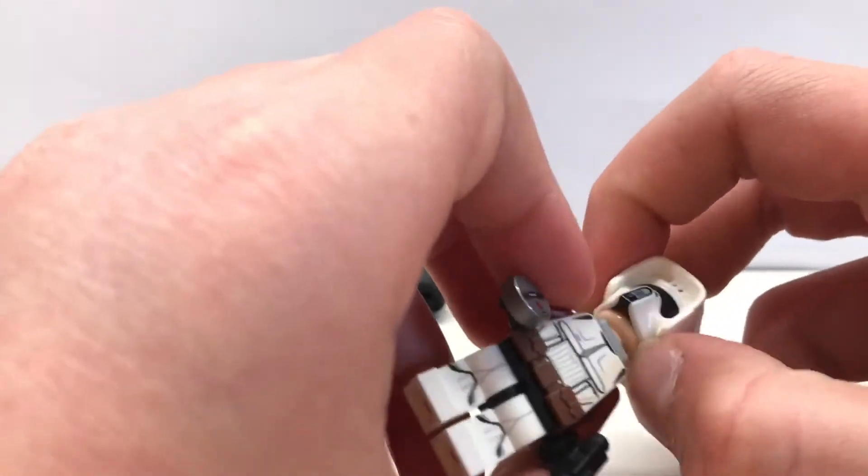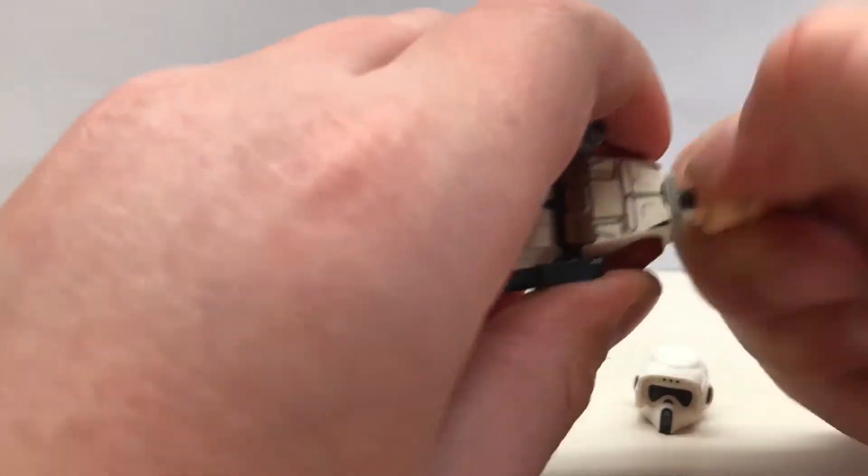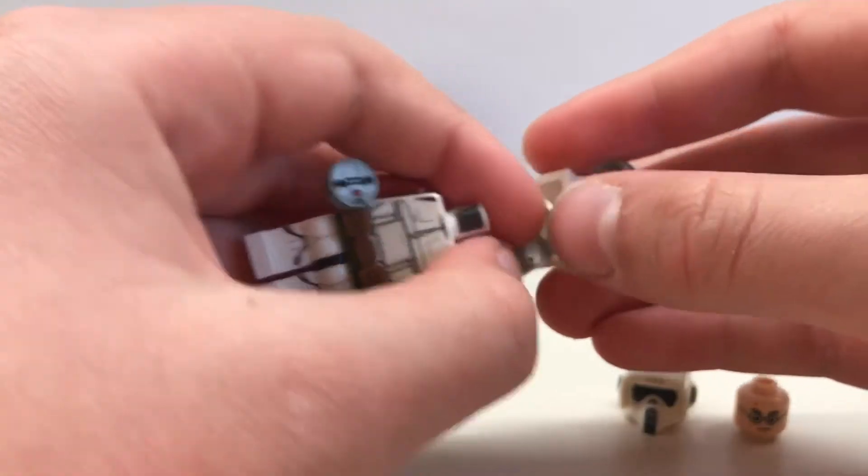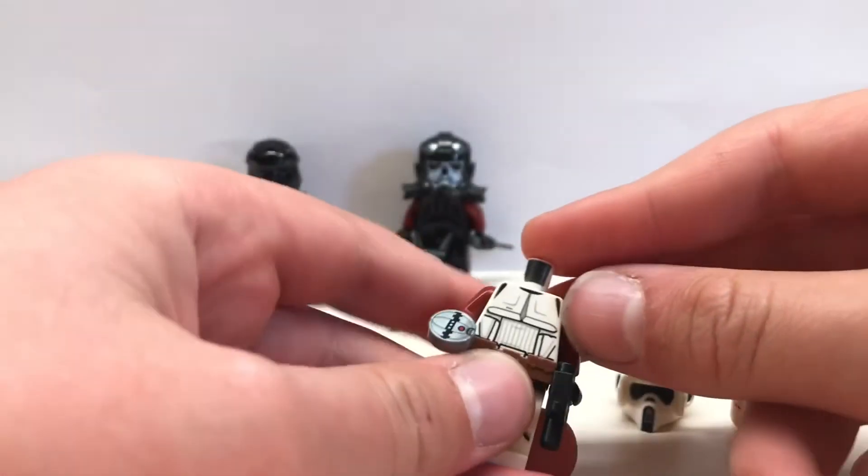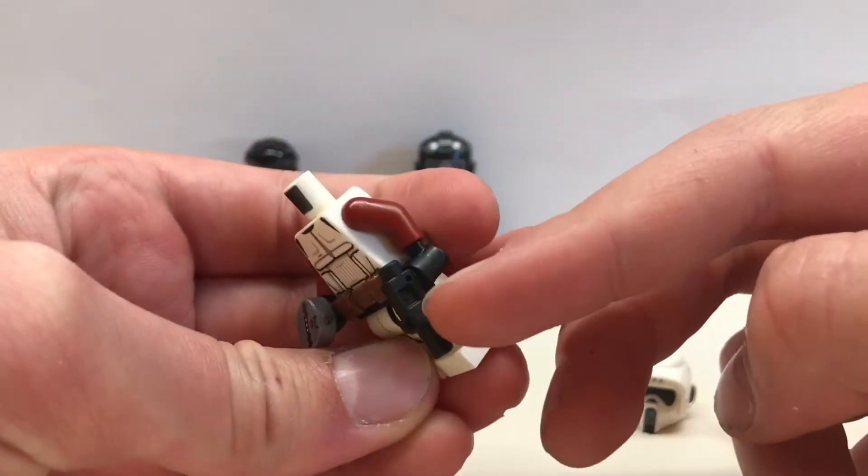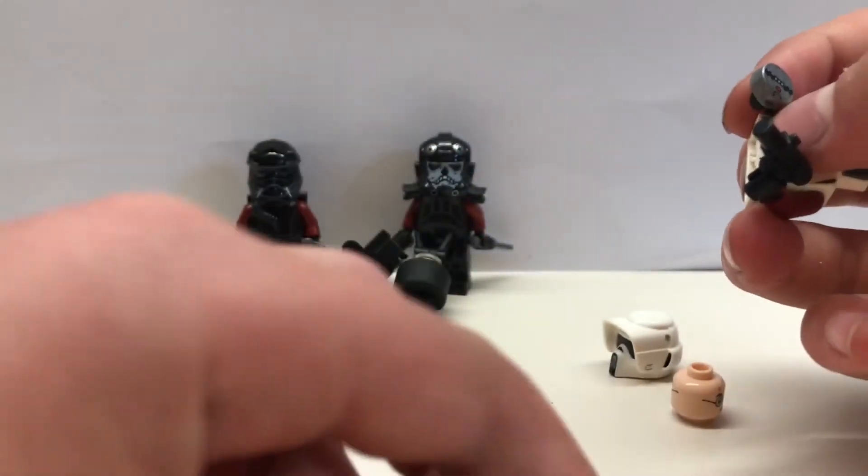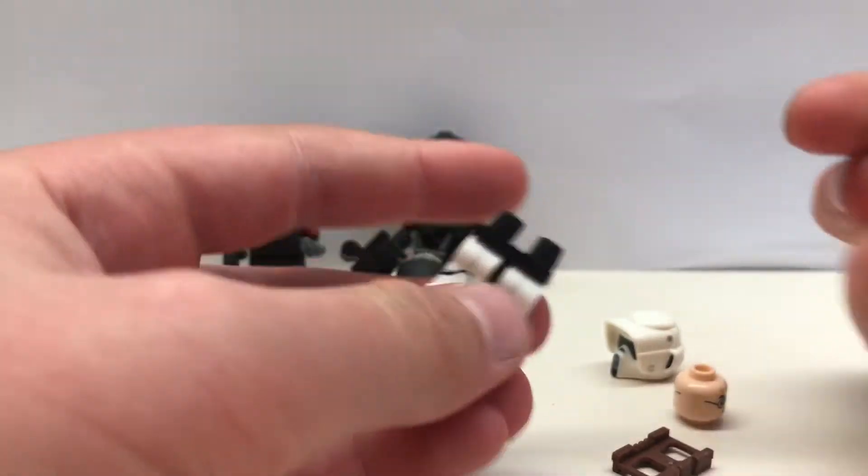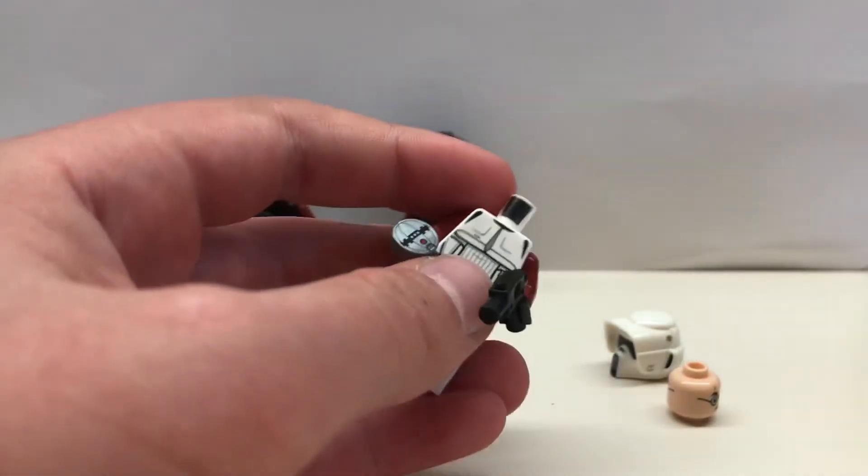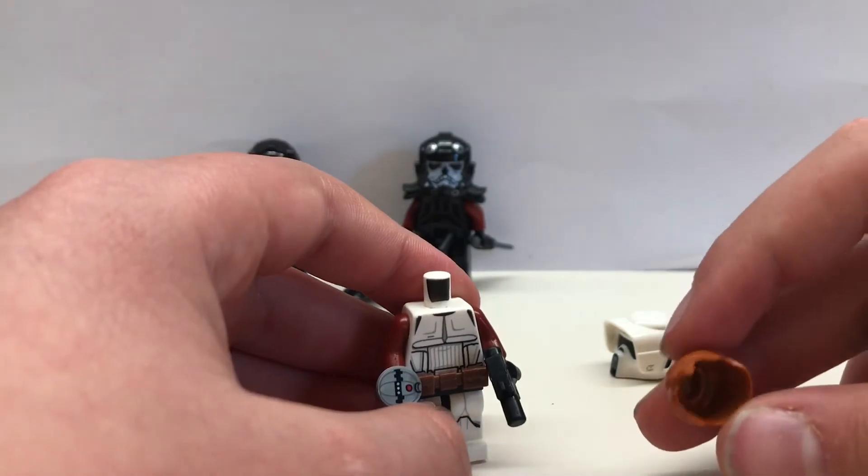Then next, which is Tech, he uses an Imperial scout trooper helmet, Harry Potter's head, this backpack which I'll show you how to make in a minute, this Imperial scout trooper torso with dark red arms, a thermal detonator, a commander gun, this brown Batman belt, and then clone trooper legs. And then you just assemble it like so. You could also use this messy brown ginger hair piece.